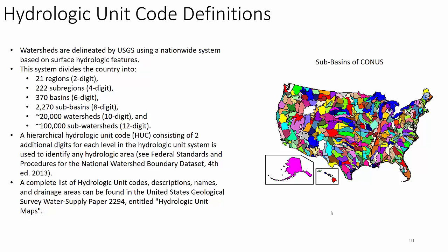Watersheds are delineated by the United States Geological Survey using a nationwide system based on surface hydrologic — predominantly topographic — features. The system divides the country into 21 regions using two-digit codes. Adding two more digits gives up to 99 sub-regions, resulting in 222 sub-regions in the United States, then 376 six-digit basins. When we go to the eight-digit sub-basin — the HUC-8, or hydrologic unit code 8 — we have 2,270 of those in the United States. That's an important number to remember: 2,270 HUC-8 sub-basins.